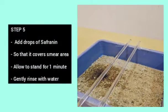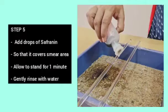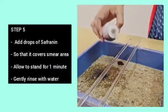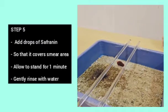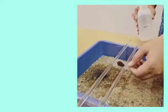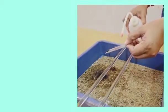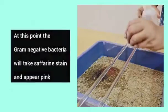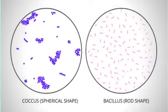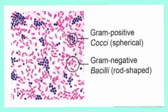Step 5. Now, add drops of saffronin which is the counter stain or a secondary stain so that it covers the smear area only. Allow it to stand for 1 minute. Gently rinse with water and remove the excess water. At this point, gram negative bacteria will take the saffronin stain and appear pink.